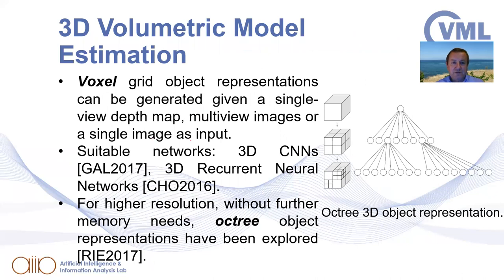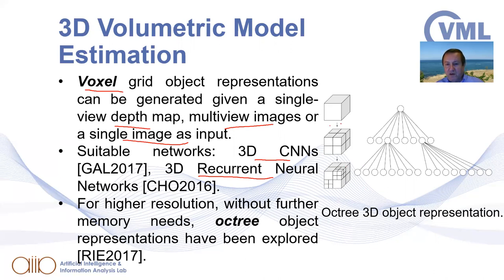Another way to represent 3D objects is to use volumetric models based on voxels. These can be generated from depth maps, multi-view images, or even single images. Networks such as 3D CNNs and 3D recurrent neural networks can be used. An octree-based representation — OC3 — progressively goes into more detail with a deeper octree. For higher resolution without increasing memory needs, the octree approach is the way to go.